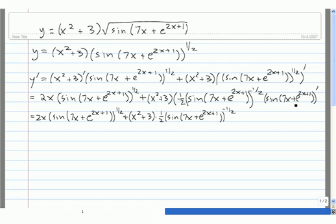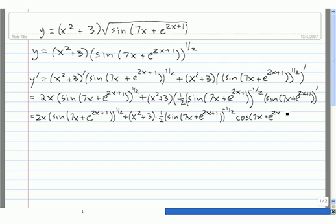To differentiate sine of 7x plus e to the 2x plus 1, we start by finding the derivative of the outside evaluated at the inside. The outside function is sine of x, whose derivative is cosine. So we get cosine of our inside function — cosine of 7x plus e to the 2x plus 1 — then multiply by the derivative of this inside.